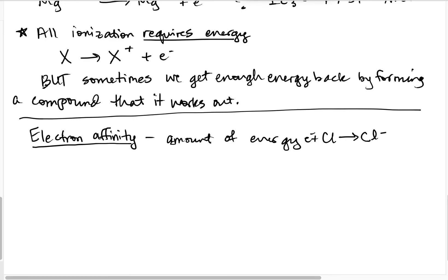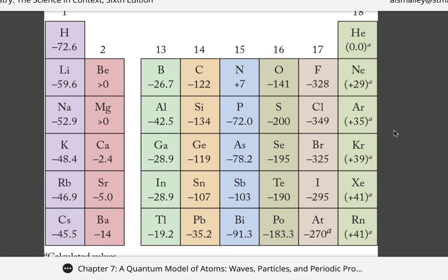Looking at the electron affinity table — figure 7.40 from the book — we see energies in kJ/mol. If the energy is negative, we're releasing energy; if positive, we must put energy in. Fluoride, chloride, bromide, and iodide — all halogens we know form anions — and you can see that we release energy when we make anions out of most of the elements on this table.